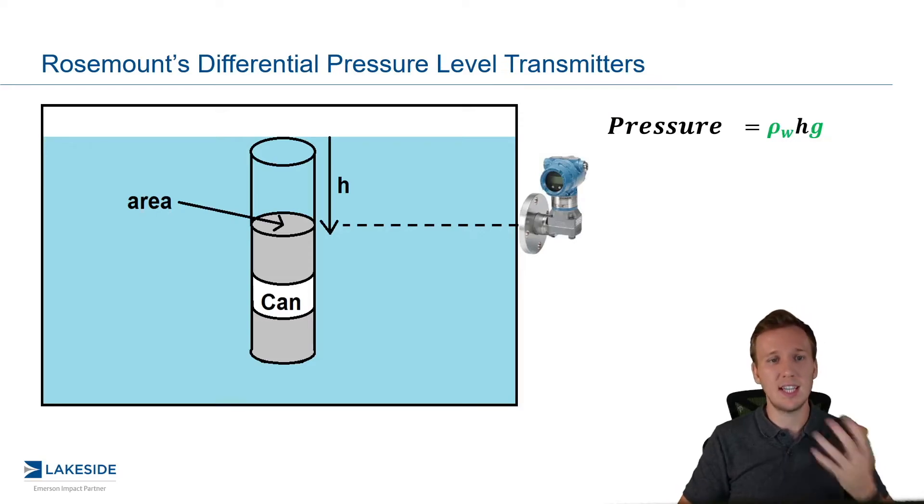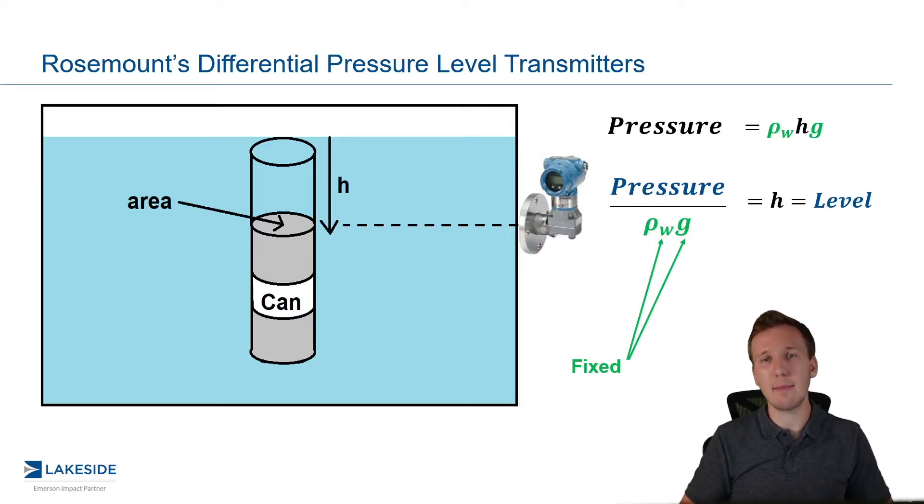So pressure is simply equal to the density times the height of the liquid above it times the gravitational constant. Well, if we bring those fixed terms beneath that pressure transmitter reading, we then are left with height on the right side, really the level measurement.